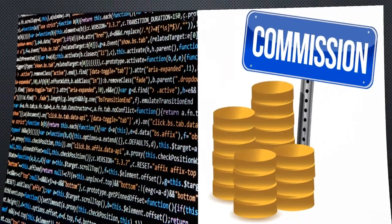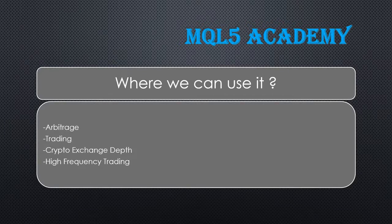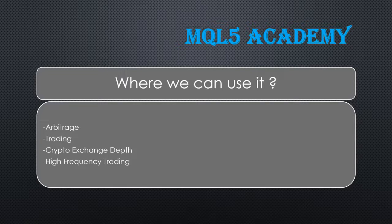Where can we use these systems? The first use case is arbitrage — buying a product at a low price and selling it at the same time at a higher price on another market. If you notice a price difference for the same product on different markets, you buy at the lowest and sell at the highest. Arbitrage requires extremely high speed, sometimes within milliseconds, which makes algorithmic trading necessary, as algorithms dominate humans due to their speed.